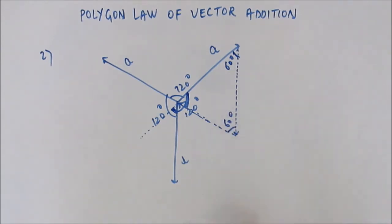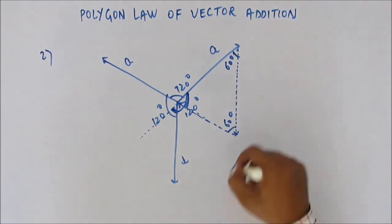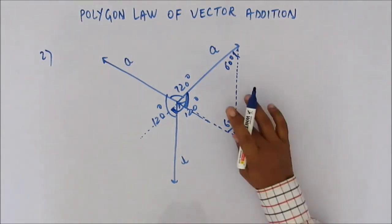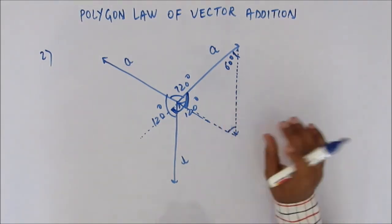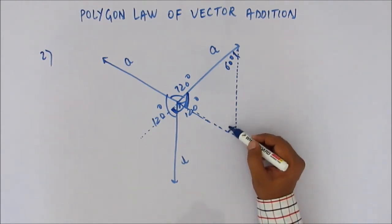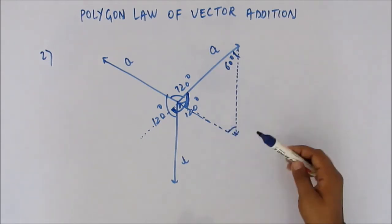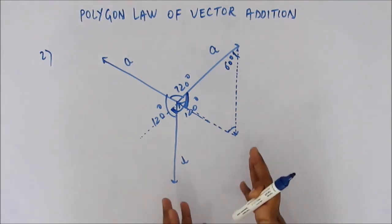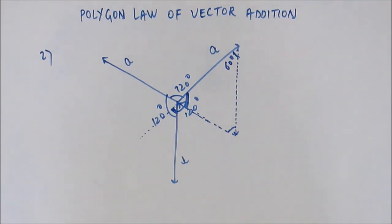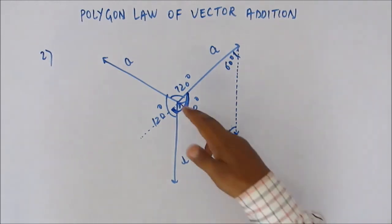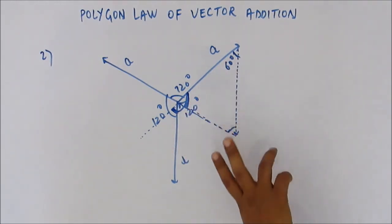So all three internal angles are 60°, confirming this is an equilateral triangle. The sum of internal angles of a triangle is 180°, and 60° + 60° + 60° = 180°. We've proved these three vectors form a closed polygon — in this case, an equilateral triangle.